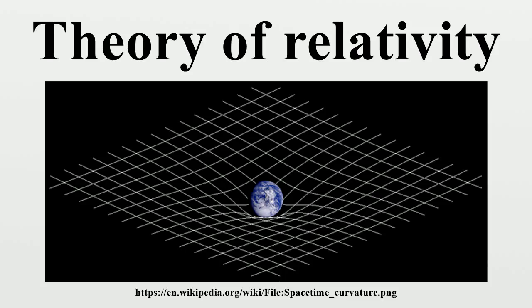The theory of relativity transformed theoretical physics and astronomy during the 20th century. When first published, relativity superseded a 200-year-old theory of mechanics created primarily by Isaac Newton. In the field of physics, relativity improved the science of elementary particles and their fundamental interactions, along with ushering in the nuclear age. With relativity, cosmology and astrophysics predicted extraordinary astronomical phenomena such as neutron stars, black holes, and gravitational waves.